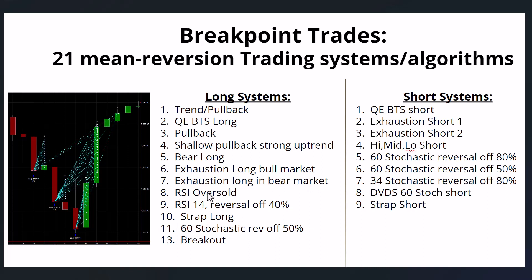There's also the same type of trade in a bear market with more stringent conditions. RSI oversold — the 14 RSI is oversold, with other parameters. RSI 14 looks for a reversal off the 40% level with a candle. S-trap long is a 60 stochastic reversal off 50% long — the 50% area is a good dividing line between an uptrend and a downtrend. And breakout, which isn't exactly a mean reversion; it goes long with price breaking out to new highs or over recent highs, using the DVI or ADX indicator, which is very good for trending.